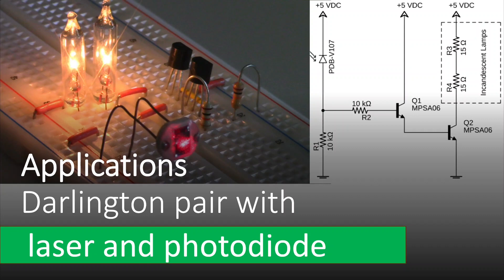Specifically, I'd like to detect the presence of a laser using a photodiode, and then we'll use a Darlington pair to buffer that signal.